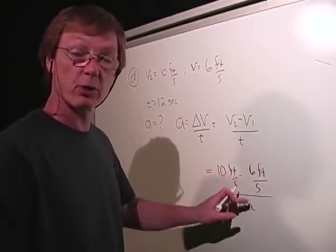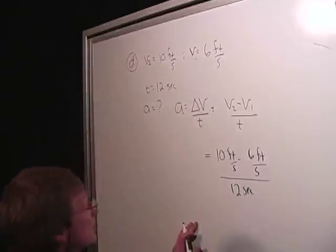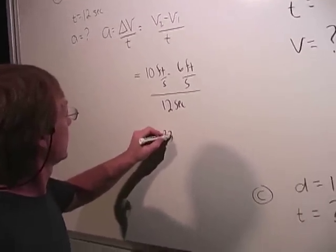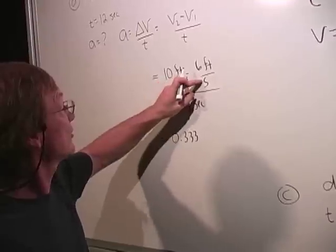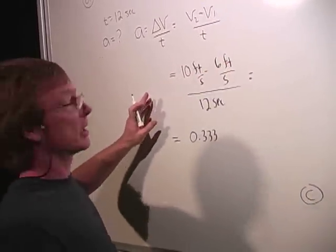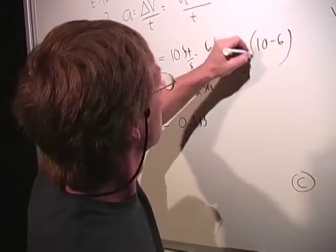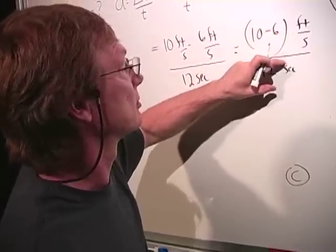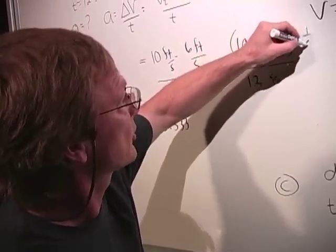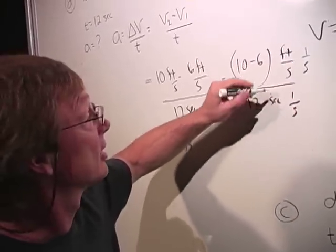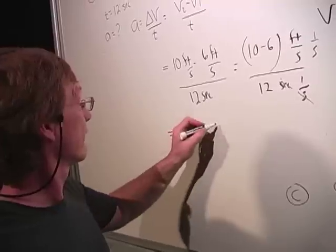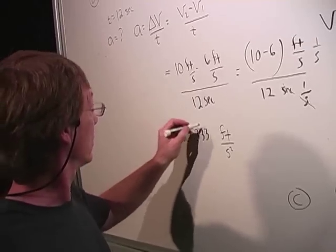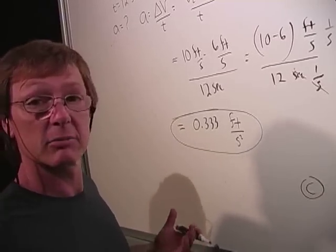So that's 10 minus 6 equals 4. 4 divided by 12 would be a third, or 0.333. And I get an answer of 0.333 feet per second per second. I could write it out, that's 10 minus 6 feet per second divided by 12 seconds. These won't cancel. If I multiply the top by 1 over seconds and the bottom by 1 over seconds, they're going to cancel here. And I'll wind up with feet per second squared. So the units work out. Feet per second divided by seconds is feet per second squared. Try that. Make sure you get that.